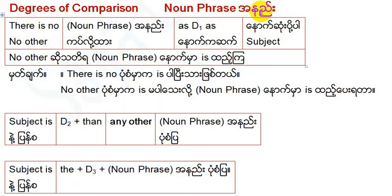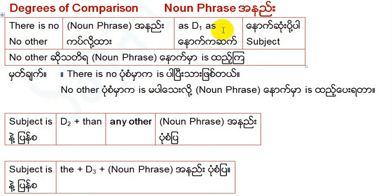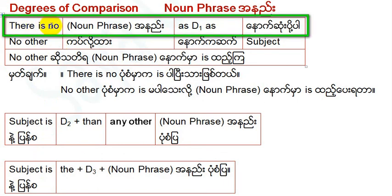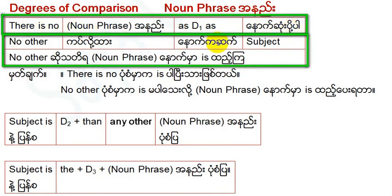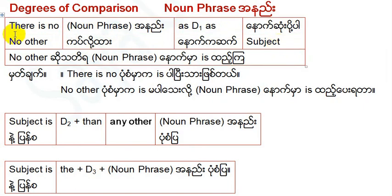Degrees of comparison — noun phrase is zero. If you want to write D1, use no SD1S. If you want to write D1, no SD1S. Now if you want to write D2, D1 equals zero — there is no other non-freeze.